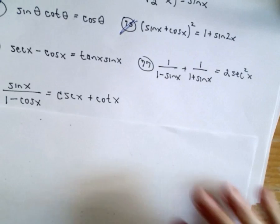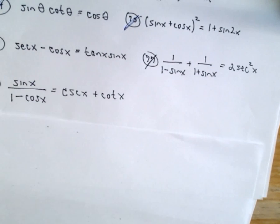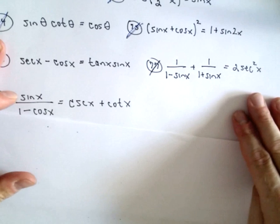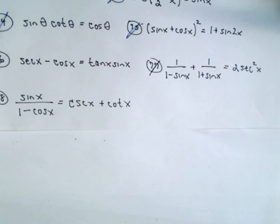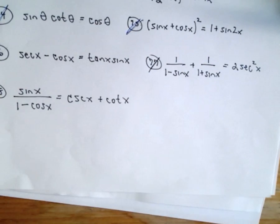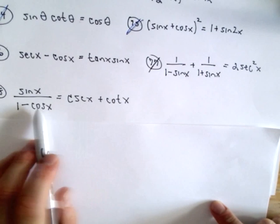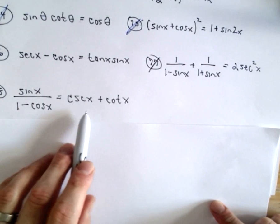Last but not least, number 78: we've got sin(x)/(1-cos(x)). We want to show that equals csc(x) + cot(x). So what I'm actually going to do with this one is start with the right hand side. It's probably easier.